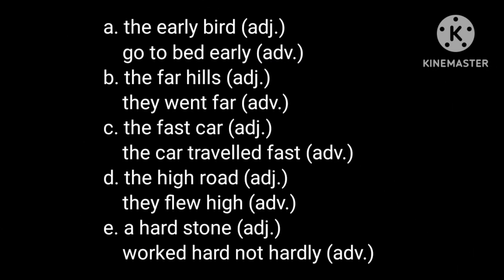Choosing five words, the sentences are: (a) 'The early bird' (adjective) / 'Go to bed early' (adverb). (b) 'The far hills' (adjective) / 'They went far' (adverb). (c) 'The fast car' (adjective) / 'The car travelled fast' (adverb). (d) 'High road' (adjective) / 'They flew high' (adverb). (e) 'A hard stone' (adjective) / 'He worked hard — not hardly' (adverb).